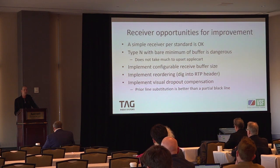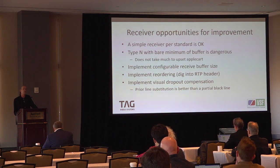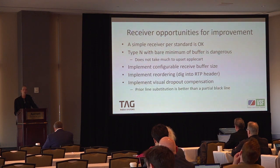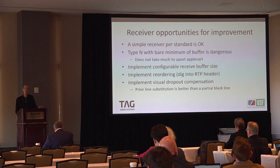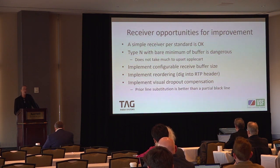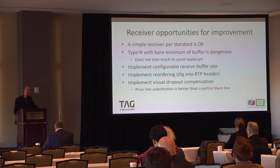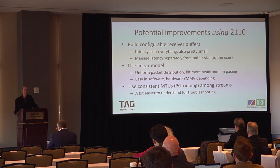There may be good opportunity in configurable receiver buffer sizes, so you can tailor the receiver to the environment. Maybe you don't want eight packets, but you don't want 720 for HD either — somewhere in between is probably a more reasonable number for your latency and packet behavior. Not everybody implements reordering, but if you only have an eight-packet buffer you have to work very fast. Also worth thinking about: dropout compensation — like on a videotape recorder, you take the prior line and insert it. That works in 2110 and saves you a big black line across your picture.